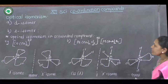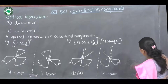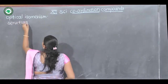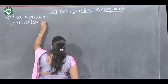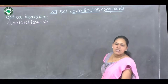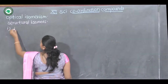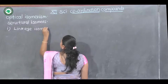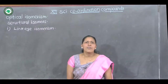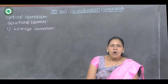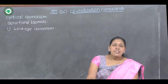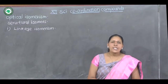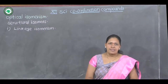The next topic is structural isomers. There are four types of structural isomers. The first type is linkage isomerism. Linkage isomers are formed when a ligand has two different donor atoms — that is, the ligand can form a coordinate bond with the central metal ion via two different atoms.